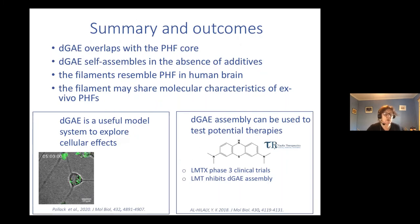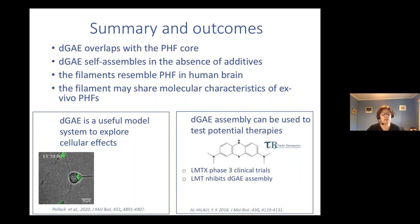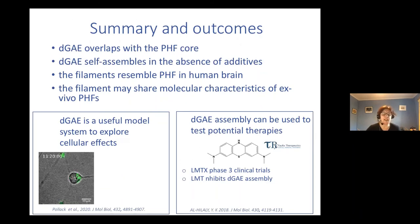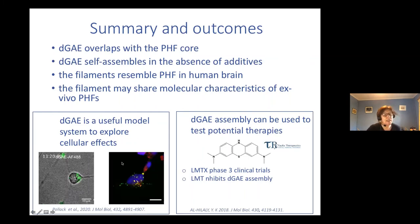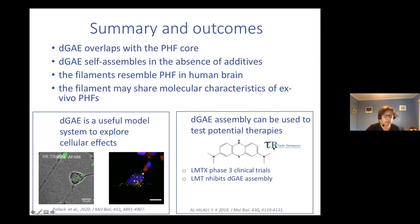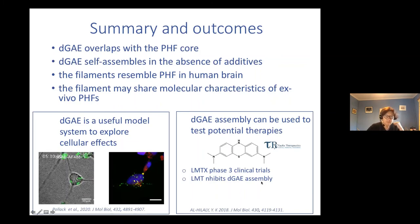To summarize: DJE overlaps with the PHF core, it self-assembles in the absence of additives without heparin, the filaments resemble PHF in human brain, and we need to do more work to really characterize the structure. We think the filament may share molecular characteristics of ex vivo PHFs. DJE without heparin is also a useful model system to explore cellular effects — shown here is DJE being internalized into cells, associating with lysosomes. It's also a good system to test potential therapies — we're working with TAURx Therapeutics to look at inhibition of this assembly.